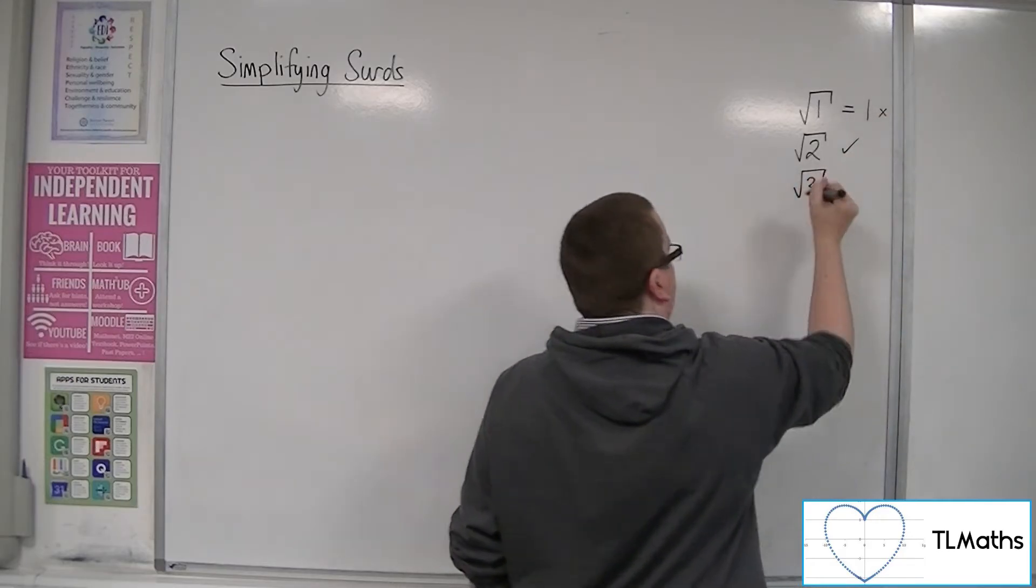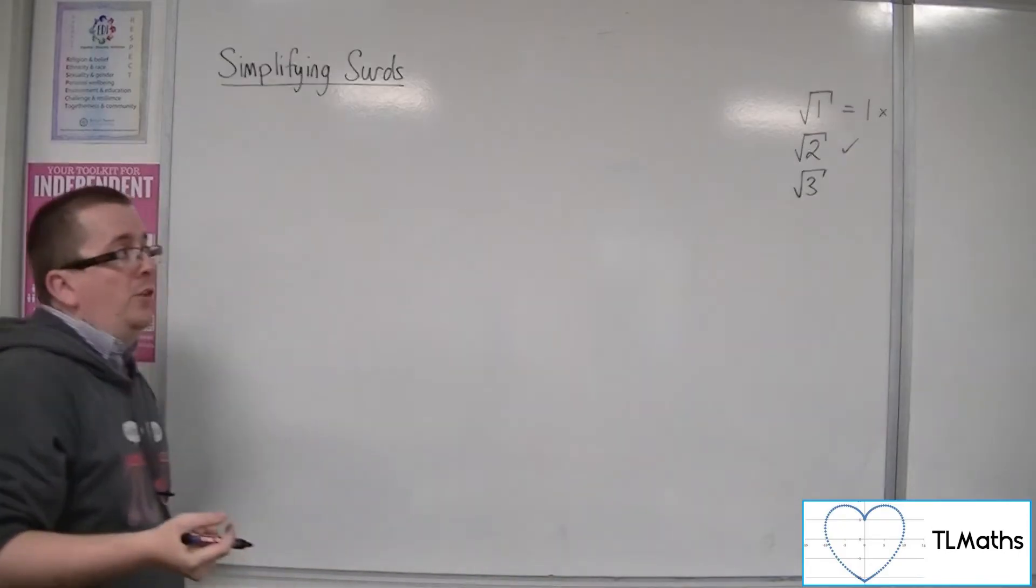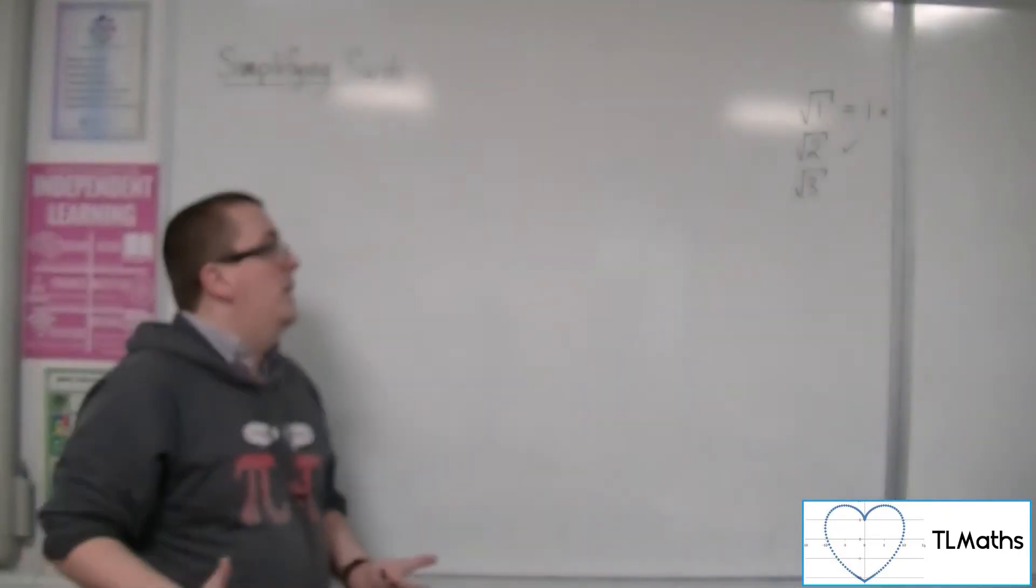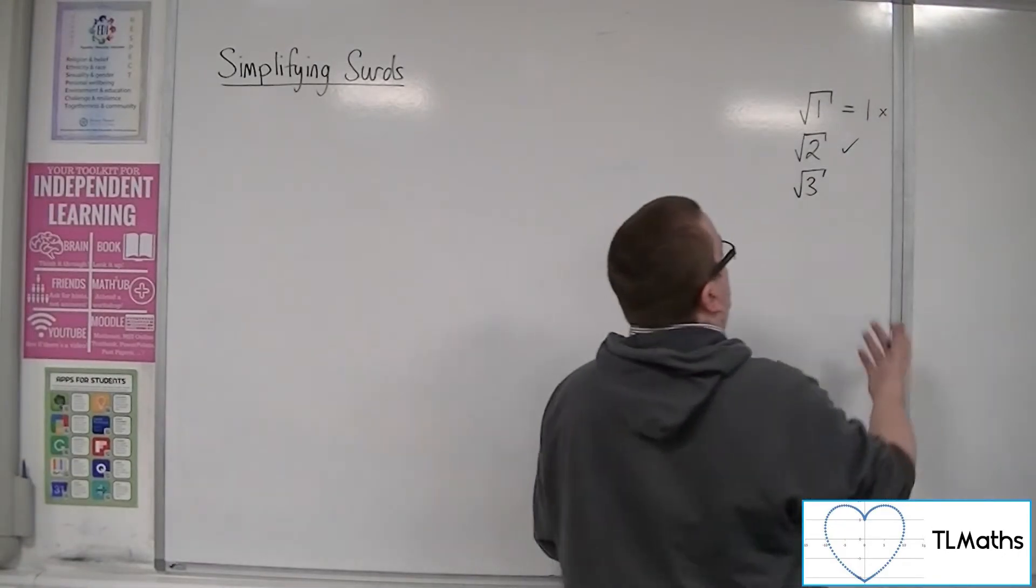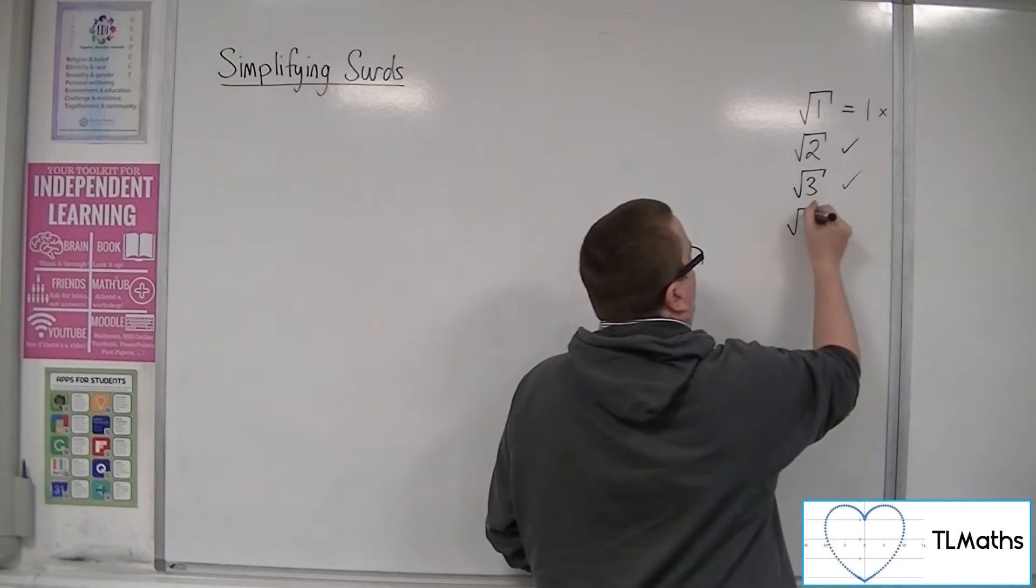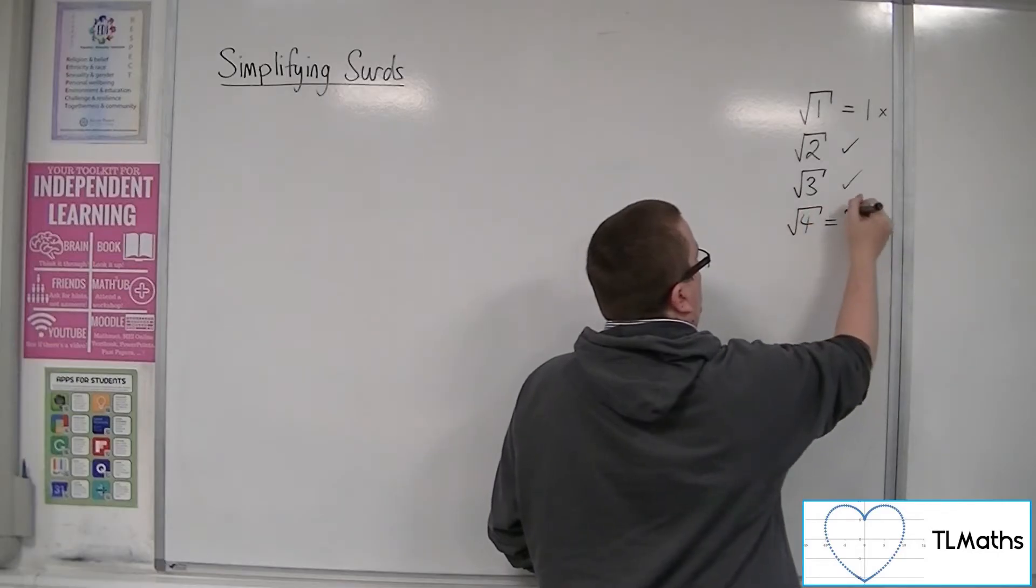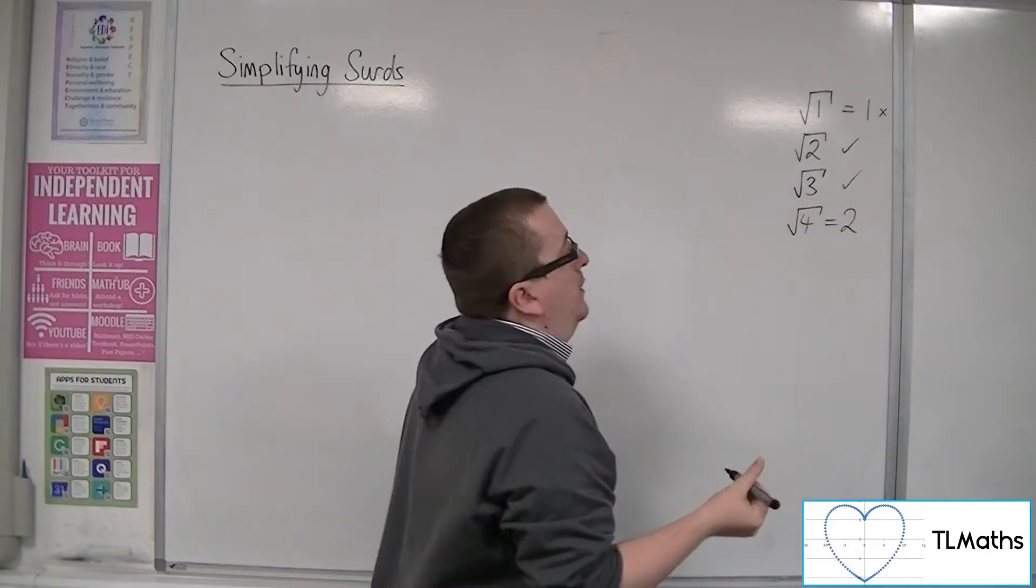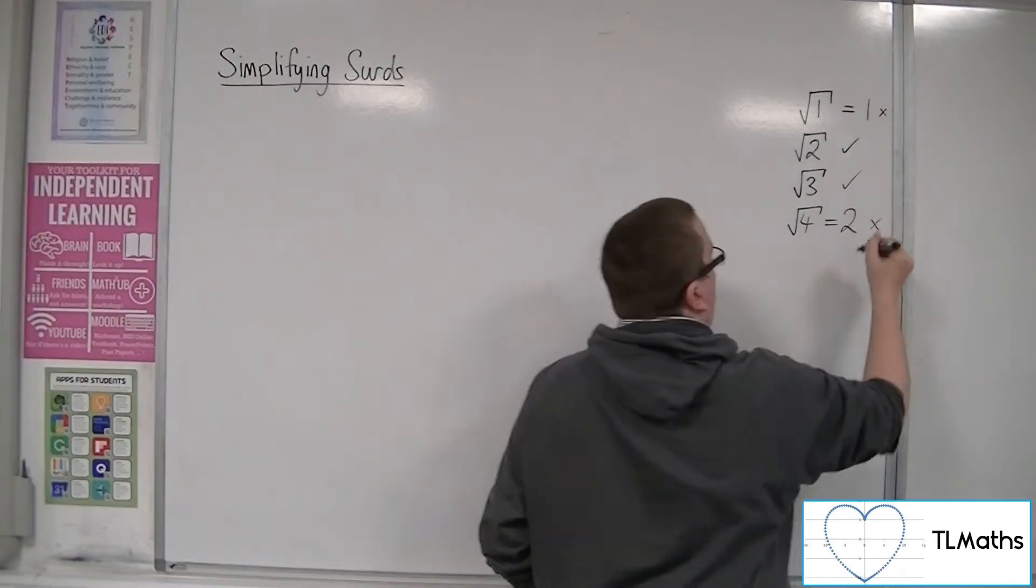Root 3 is also one that we can't break down any further, so we can't write that any other way, so that's definitely a surd. Root 4, well, we know that's just 2, square root of 4 is 2, so root 4 is not a surd.